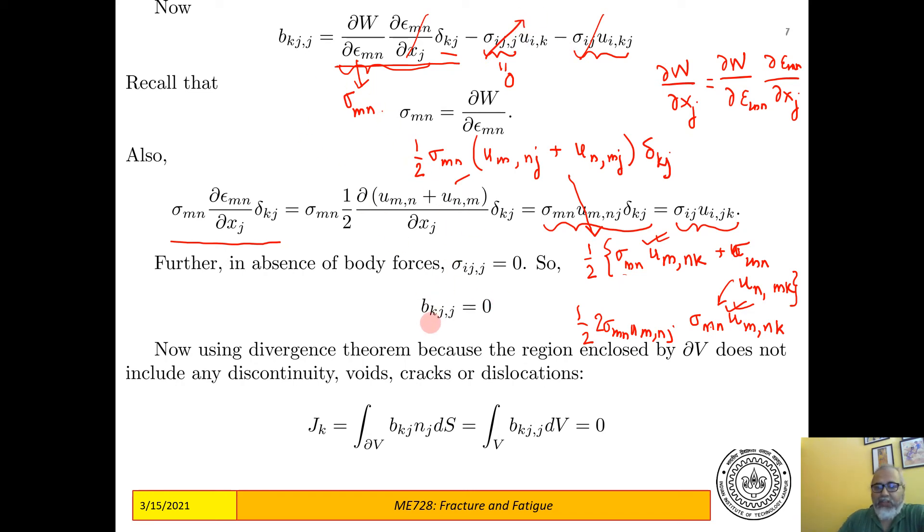And then you get B_kj,j is equal to zero. This is what you get. So the energy momentum tensor, in a defect free region, the divergence of the energy momentum tensor is equal to zero. That's what we have proved.